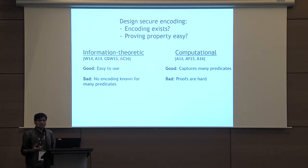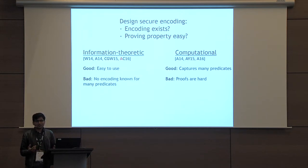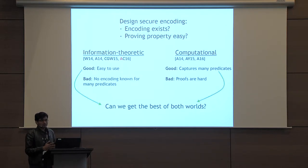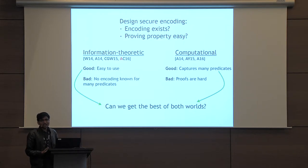The computational properties can capture many different predicates, but the problem is they are not easy to work with. In particular, one needs to find a suitable hardness assumption on bilinear maps to make them work. So the question is: can we get the best of both worlds? Can we find a property that is easy to use and at the same time captures all kinds of predicates?